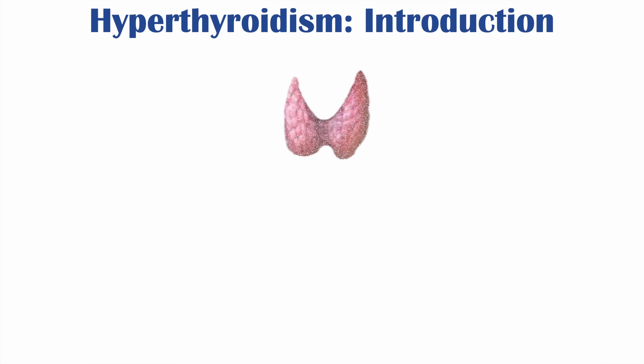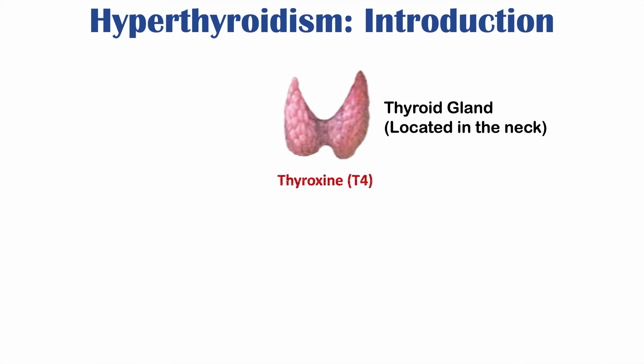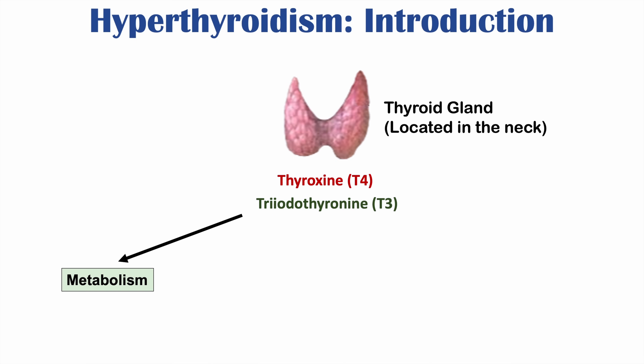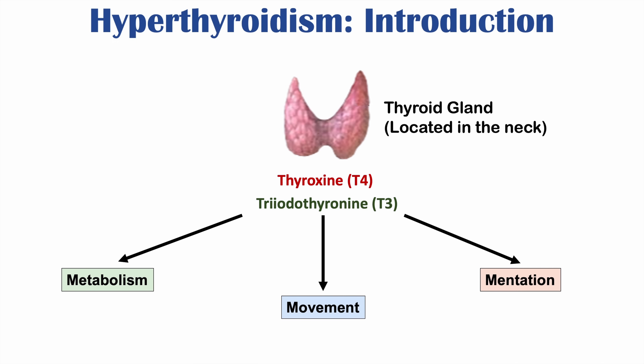The thyroid gland is located in the front of your neck, and it is responsible for making thyroid hormones — thyroxine (T4) and triiodothyronine (T3). These thyroid hormones are involved in three important functions: metabolism, movement, and mentation.